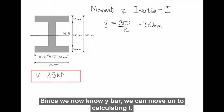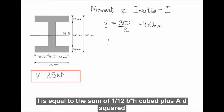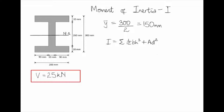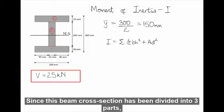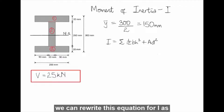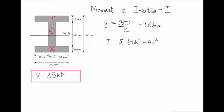Since we now know Y-bar, we can move on to calculating I. We will use the formula: I equals the sum of (1/12)BH³ plus AD². We will notice that this beam cross-section can be divided into 3 parts — 1, 2, and 3 — and we can rewrite this equation for I accordingly.